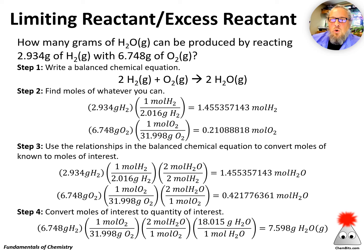Step two, find moles of whatever you can. In this case, we can find moles of both hydrogen and oxygen. So let's sort of do two stoichiometry problems simultaneously. So there's my moles of hydrogen. There's my moles of oxygen. Next, step three, use the relationships in the balanced chemical equation to convert moles of known to moles of interest. And now we get to a point where if I use all of the hydrogen, I can make 1.4 moles of water. If I use all the oxygen, I can only make 0.42 moles of water.